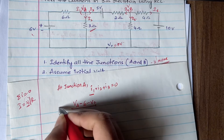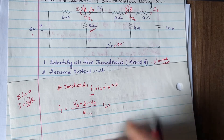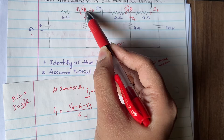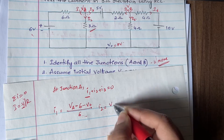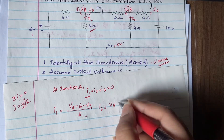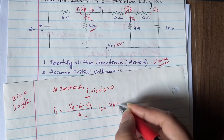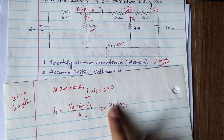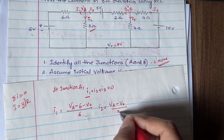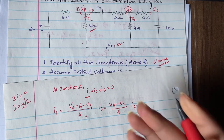For i2: Vₐ is positive since current flows from higher to lower potential. There is no other voltage source in this branch, just V₀ on the lower potential side, so minus V₀. Divided by the resistance of 3 ohms. So i2 = (Vₐ − V₀) / 3.